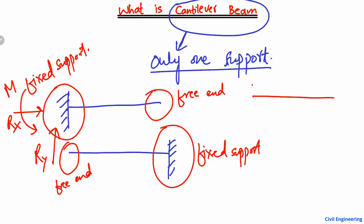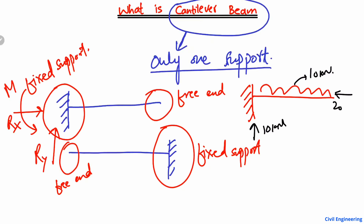For example, if there is a cantilever beam and there is any load acting on this beam, the whole load will be supported at this one end. If this load is 10 kilonewtons, then the whole load will be supported by 10 kilonewtons. If the horizontal load acting on this beam is 20 kilonewtons, then the horizontal load will be supported here by 20 kilonewtons. Similarly, the moment will also be resisted here at this end.